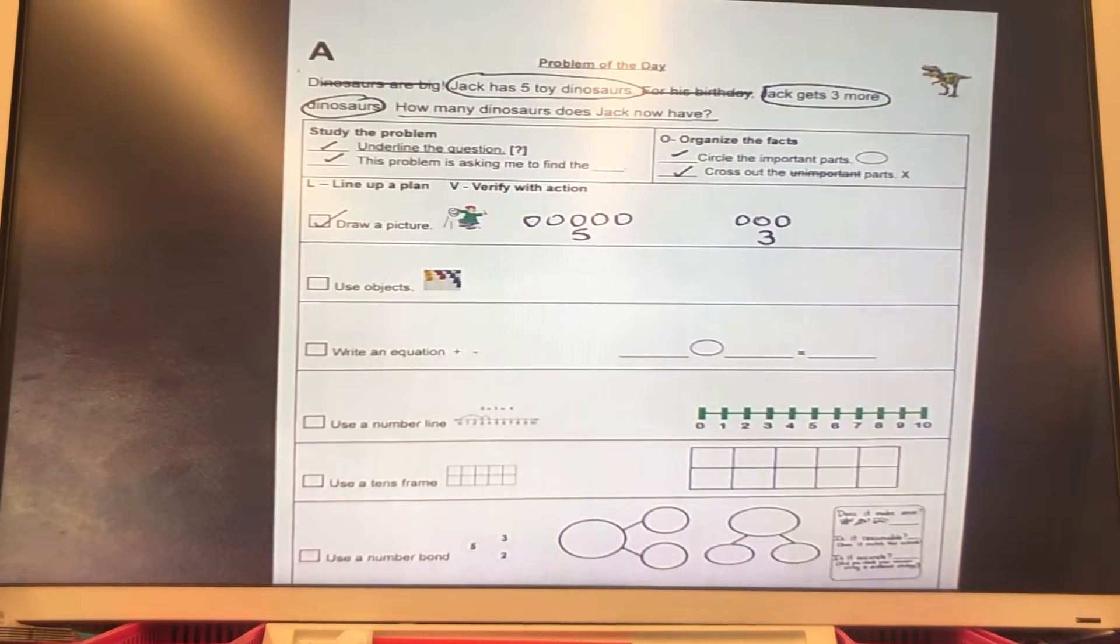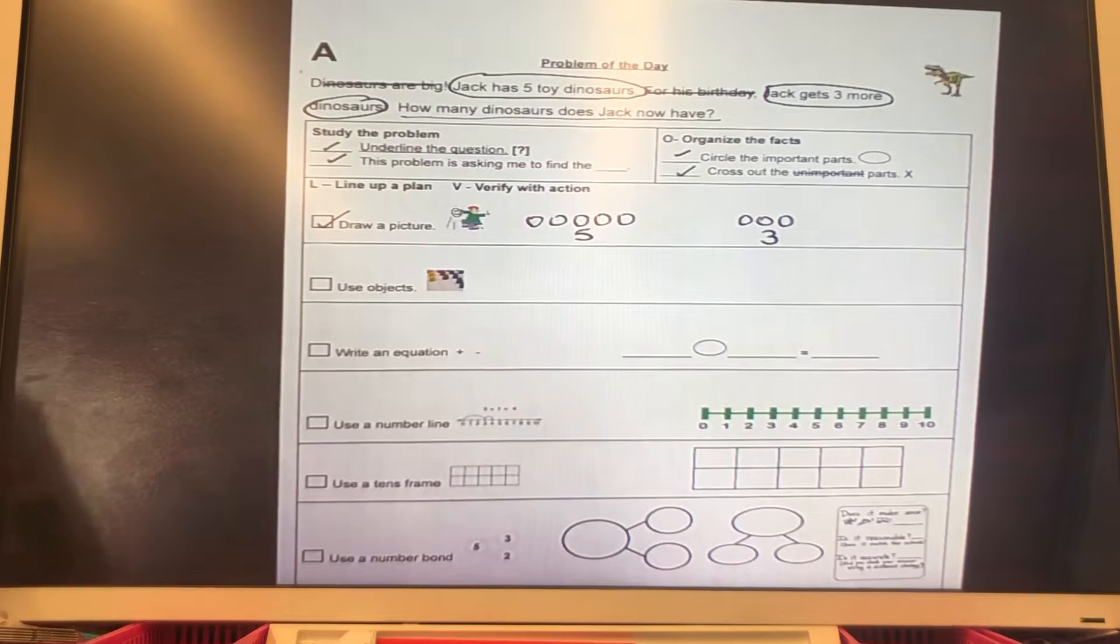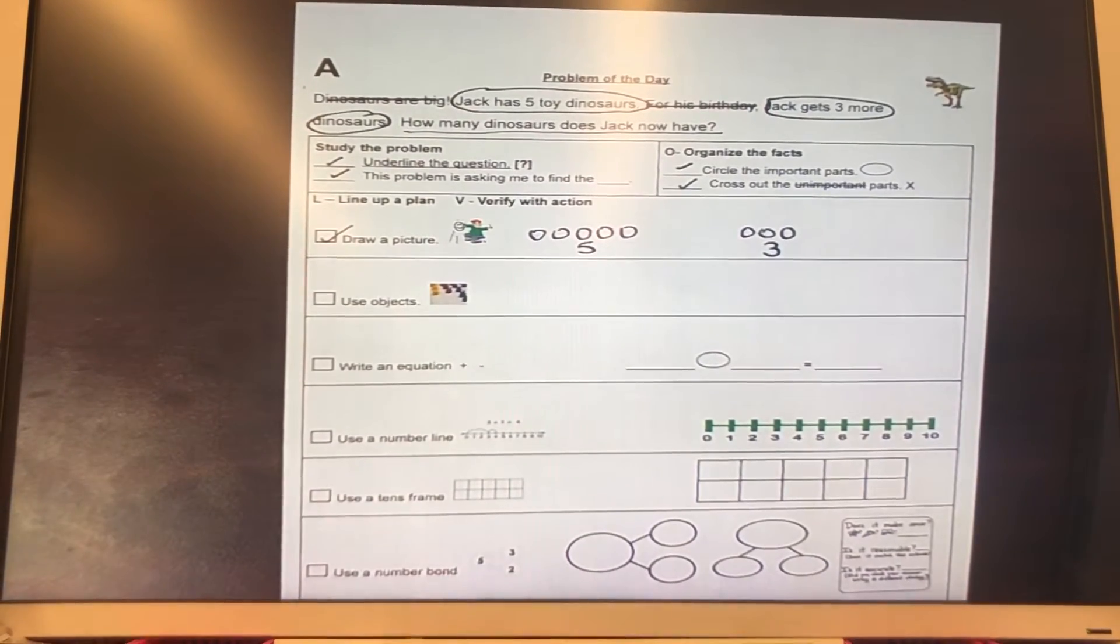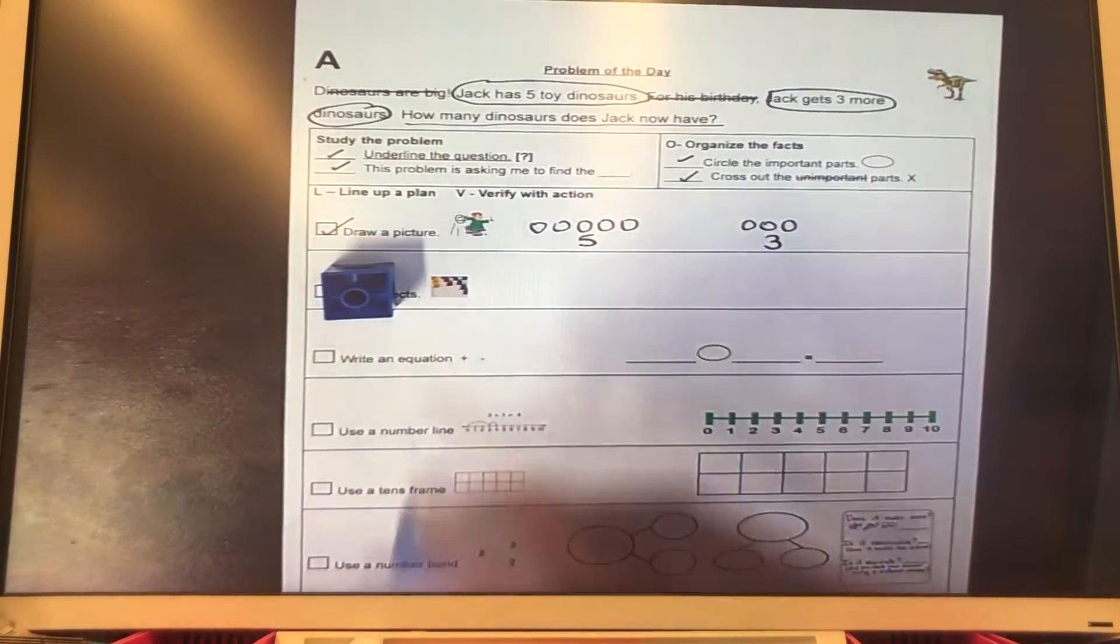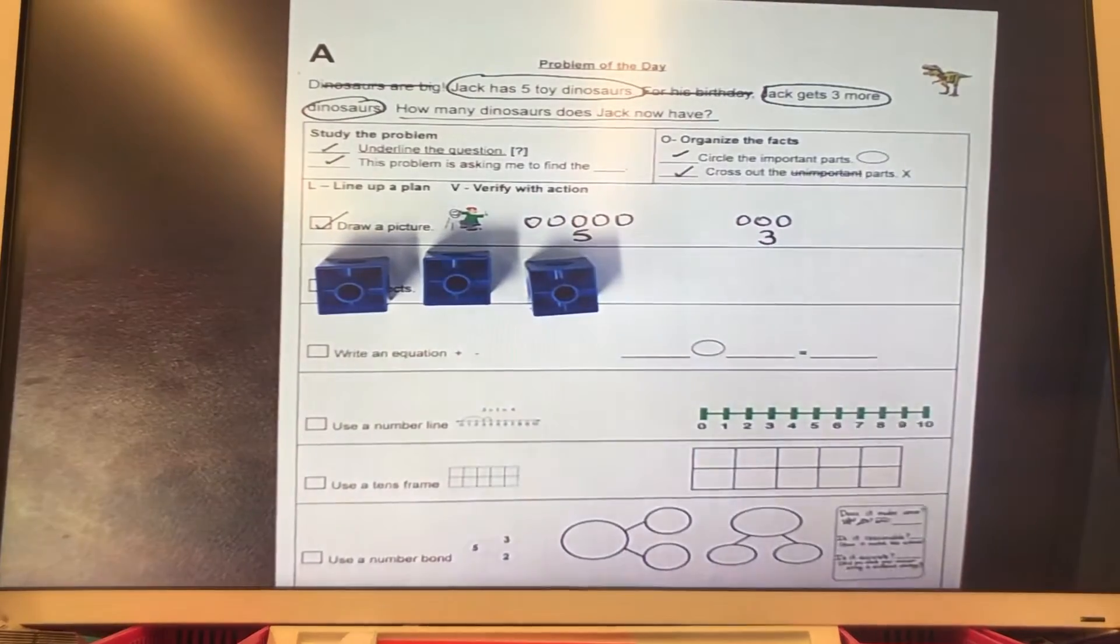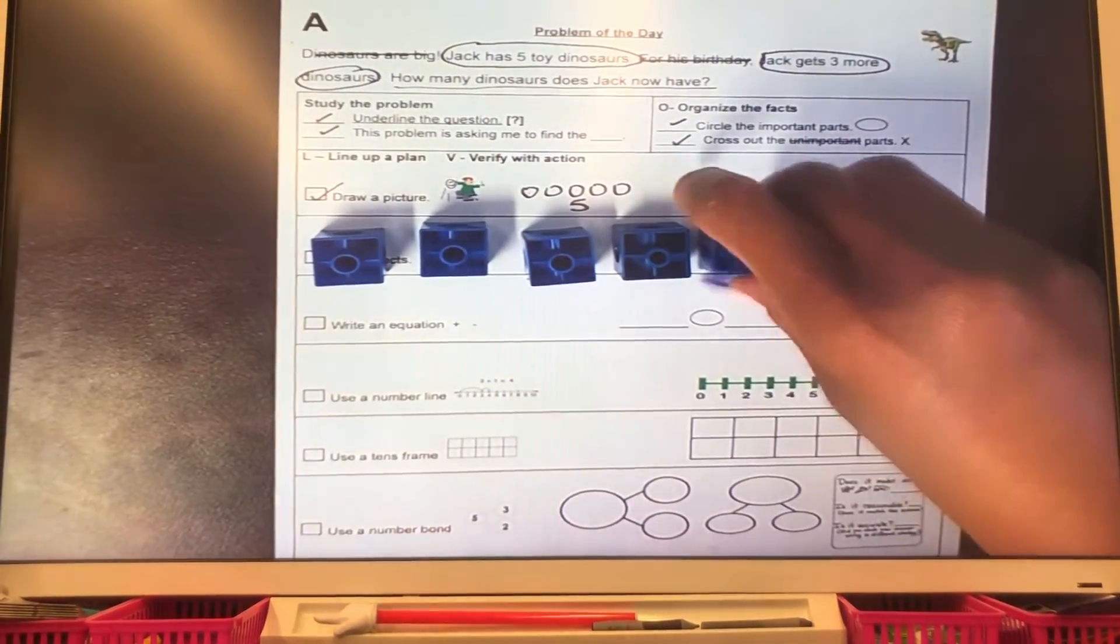And for those of us who use our objects, let's get our objects ready. And we are going to show five dinosaurs. One, two, are you counting? Three, four, and five dinosaurs.